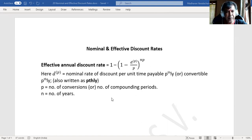Here, dp is the nominal rate of discount per unit time payable. p means the number of conversions, so what is the discount being applicable at each conversion? You call it as pthly.